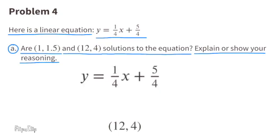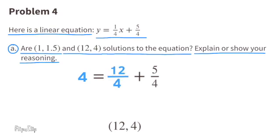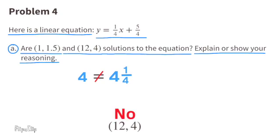For the next set of points, substitute x with 12 and y with 4. 1 fourth times 12 is 12 fourths. 12 fourths plus 5 fourths equals 17 fourths, and 17 fourths equals 4 and 1 fourth, which does not equal 4. So no, this set of points is not a solution.